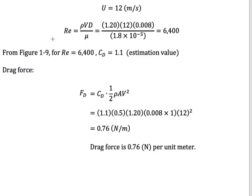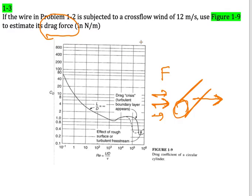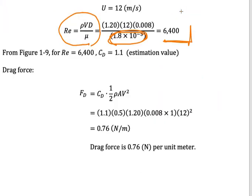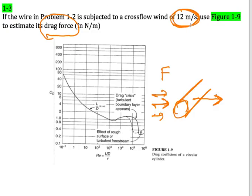For the solution, we calculate the Reynolds number, which is around 6,400. Here we have the value of dynamic viscosity μ for this wind condition, and we substitute everything to get Re = 6,400. At master level, we cannot use just a single number — that is the difference between undergraduate and master's level. I hope you start to learn how to use tables, figures, or charts to solve problems.